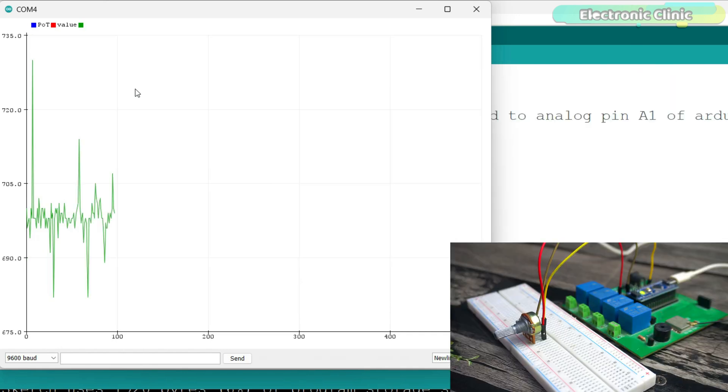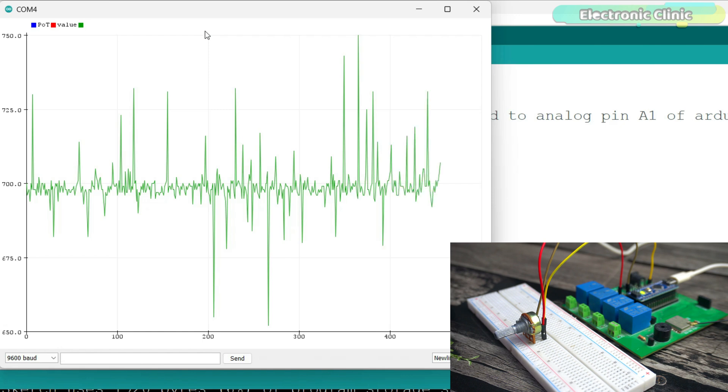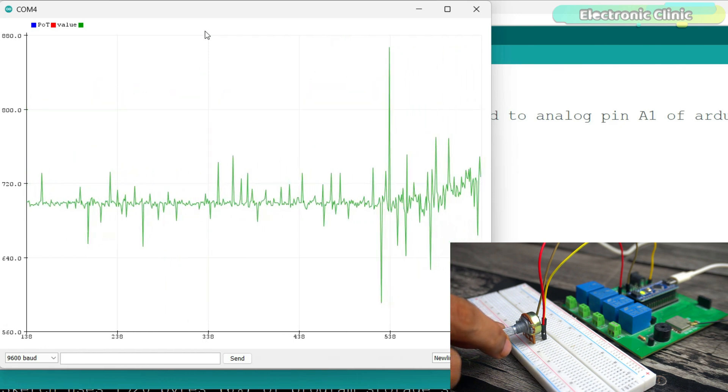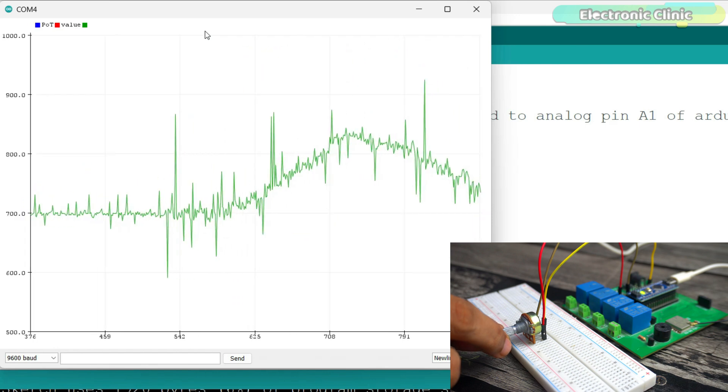On the graph, you can see that the signal is very noisy even though I haven't touched the potentiometer. With such a noisy and fluctuating signal, we cannot efficiently control servos, brush motors, BLDC motors, and other output devices. Let's understand why this is a problem.